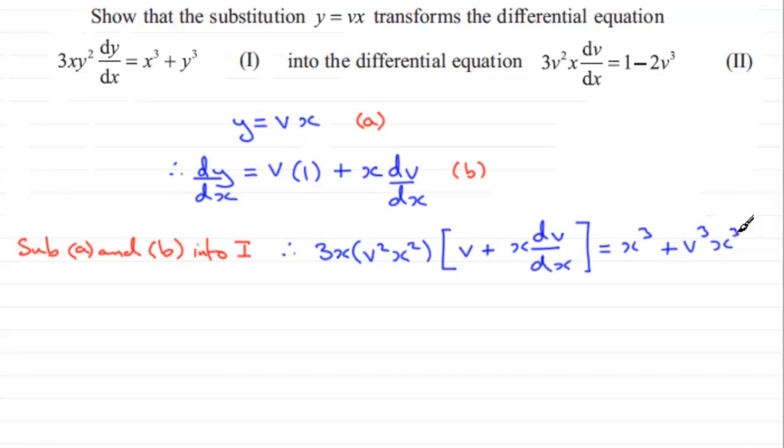So v cubed x cubed multiplied by that x is going to give me 3x to the power 4. Now if I expand the bracket here and just tidy up as we go, we're therefore going to have 3x cubed multiplied by a v squared and a v, so that's going to be v cubed, and then plus...